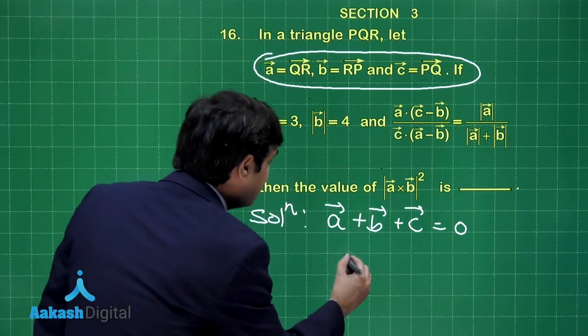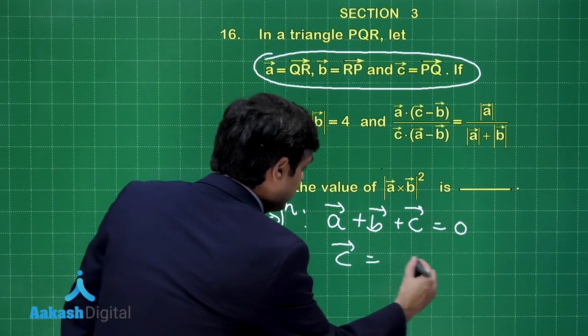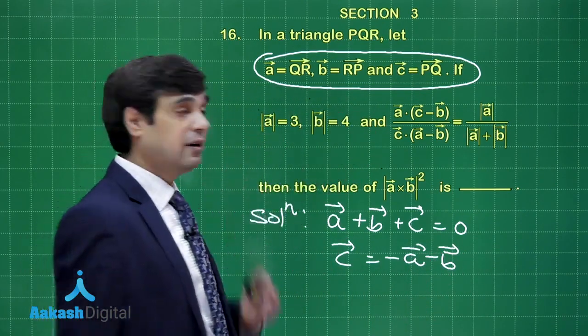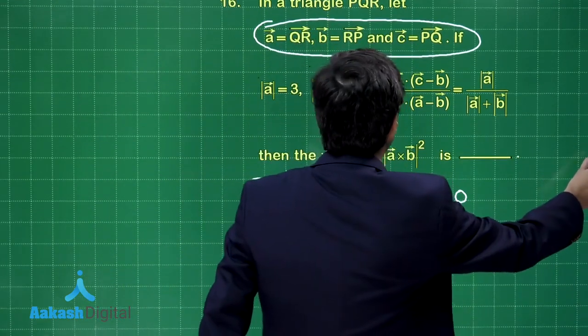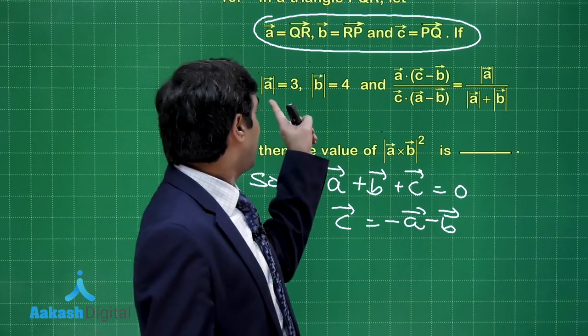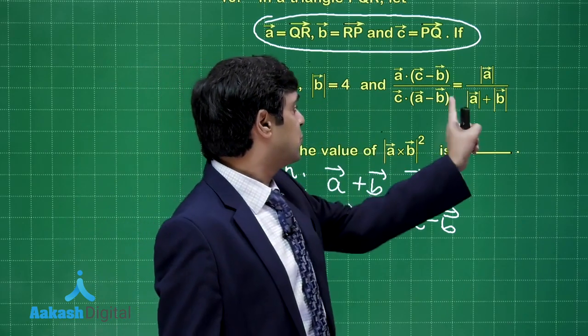Or we can simply say C vector is minus A vector minus B vector and we can replace it there. Either way we can go for it. It is not going to make a big difference. A vector modulus, B vector modulus 3 and 4, so this is 7.